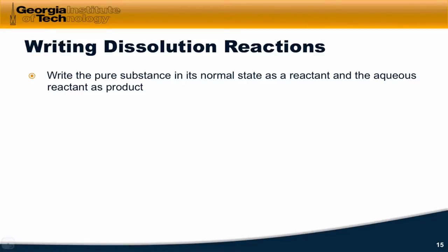To write dissolution reactions, we start on the reactant side with the pure substance in its normal state, that is, its state at, say, room temperature and atmospheric pressure. And on the product side, we write the aqueous version of the reactant. So as an example, let's consider the dissolution of ethanol, CH3CH2OH, in water.